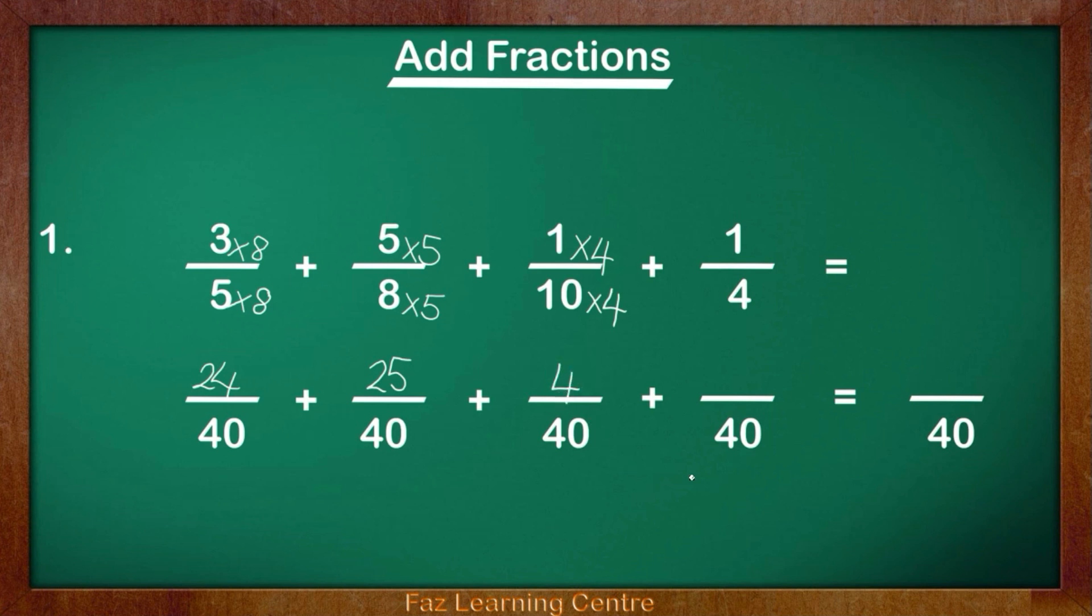Let's look at the last one. 1 fourth is the fraction. 4 times what equals 40? I know 4 times 10 equals 40. So we multiplied the denominator by 10. We are going to multiply the numerator by 10. So we got 10 over 40.